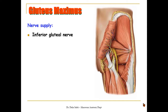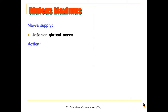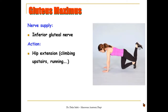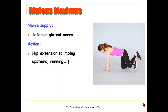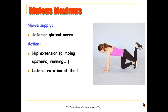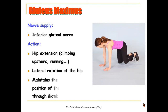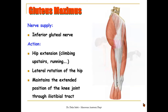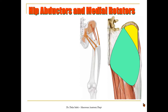The nerve supply of gluteus maximus is through the inferior gluteal nerve, which supplies no other muscle. Regarding its action, it is a very powerful muscle and the main extensor of the hip joint, especially in extreme movements such as climbing stairs or running. It is also a powerful lateral rotator of the hip, and through its insertion into the iliotibial tract it helps maintain the extended position of the knee joint. To revise: it originates from the back of the ilium, sacrum, coccyx, and sacrotuberous ligament; its deeper part inserts into the gluteal tuberosity and its superficial part into the iliotibial tract.